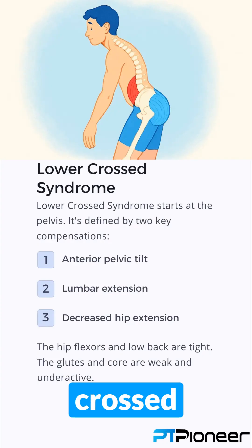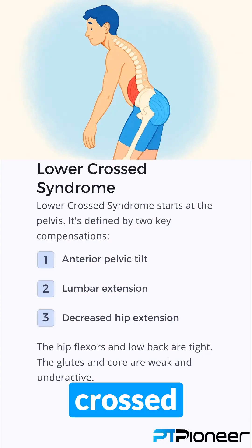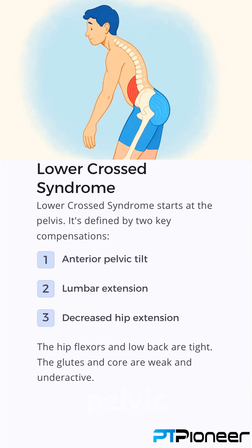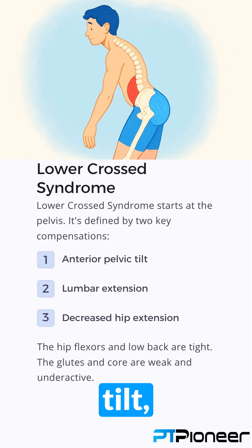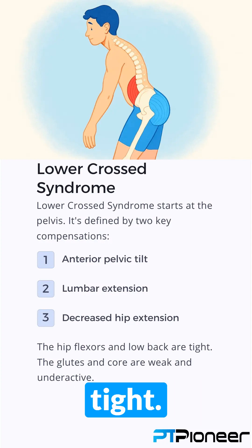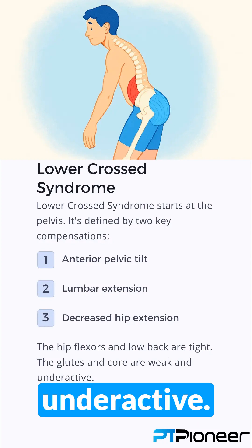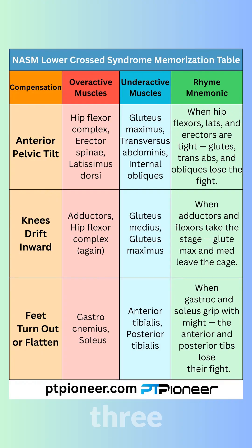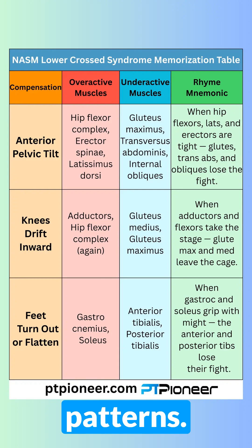Number four: Lower crossed syndrome. Lower crossed syndrome starts at the pelvis. It's defined by two key compensations: anterior pelvic tilt, lumbar extension, and decreased hip extension. The hip flexors and low back are tight. The glutes and core are weak and underactive. Here's the table for lower crossed syndrome covering all three compensations. Screenshot it now so you never forget the muscle patterns.